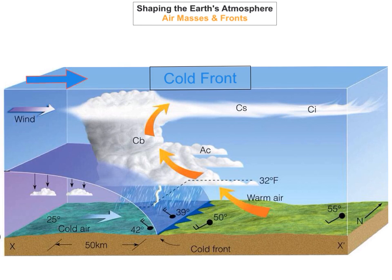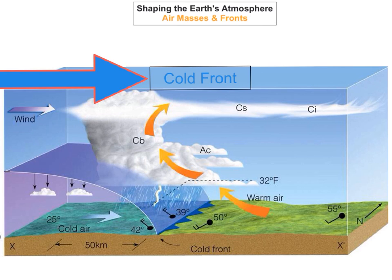So the first one we're going to look at is a cold front. A cold front forms when you've got a cold air mass and a warm air mass. The area where they actually meet is called the front. What makes this a cold front is that the cold air mass is moving towards the warm air mass. The cold air mass moves quickly and pushes on top of the warm air mass. Because the cold and warm air masses don't mix, the warm air is forced to rise up really quickly, which brings certain weather conditions.